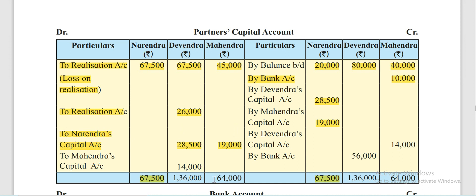Mahendra's total comes to Rs 64,000, and the difference on the credit side is Rs 14,000 — because Mahendra shouldered Narendra's deficiency, Mahendra also becomes insolvent. Mahendra's remaining balance is now a deficiency, and since only Devendra is the remaining solvent partner, Devendra shoulders Mahendra's deficiency of Rs 14,000. The second effect is shown in Devendra's column.